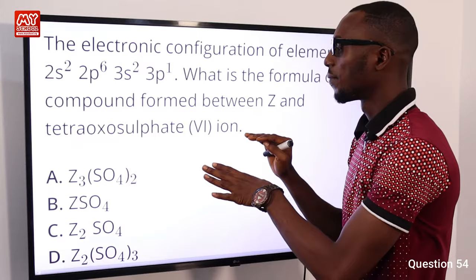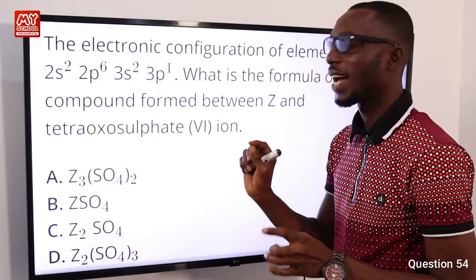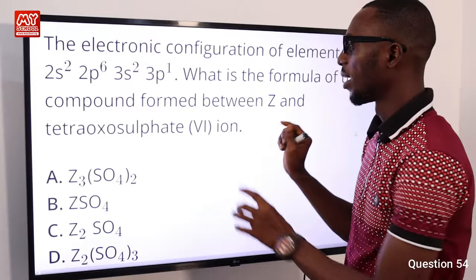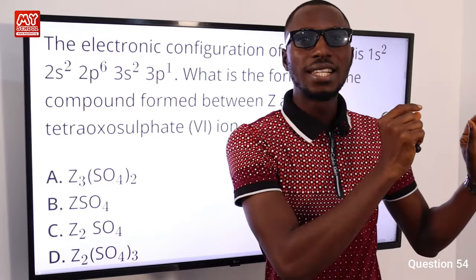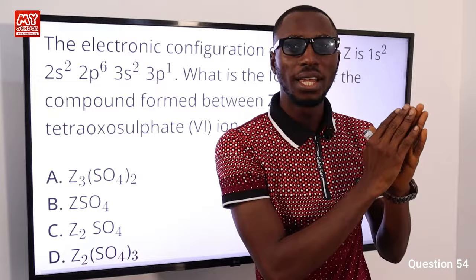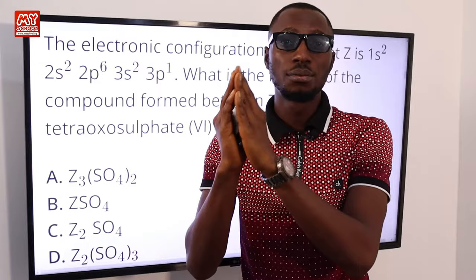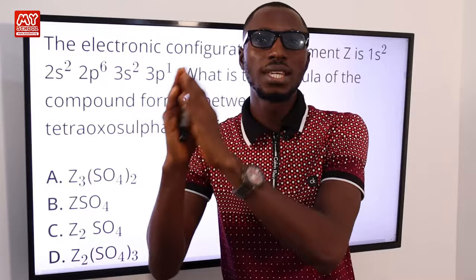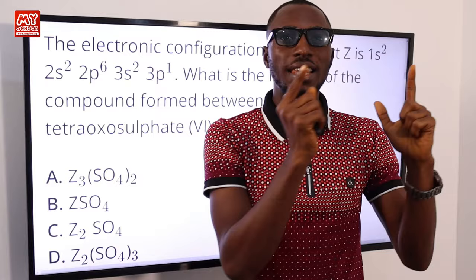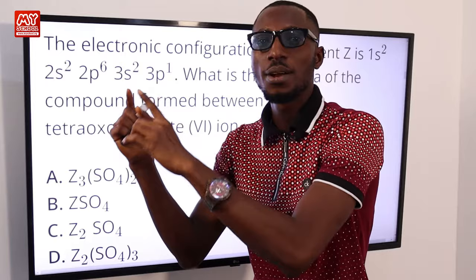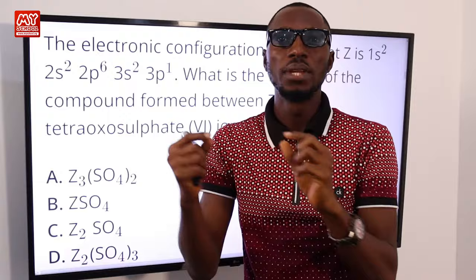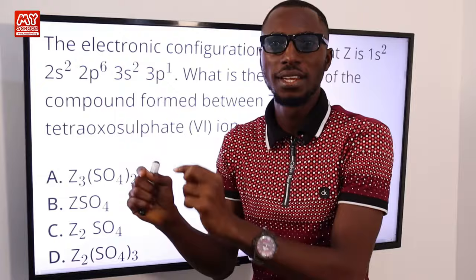Aluminium has a valence of +3 and sulfate has a charge of −2. To balance: Al needs 2 atoms (3×2=6) and SO₄²⁻ needs 3 units (2×3=6). So the formula is Z₂(SO₄)₃. Option D is correct.